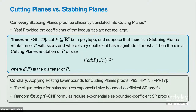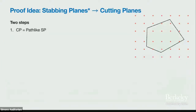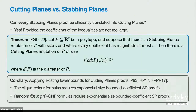We get nice corollaries from this: we get the first lower bounds on bounded-coefficient stabbing planes proofs, by applying known lower bounds for cutting planes. Specifically, we get lower bounds for the coloring formulas and lower bounds for random log-N CNF formulas.